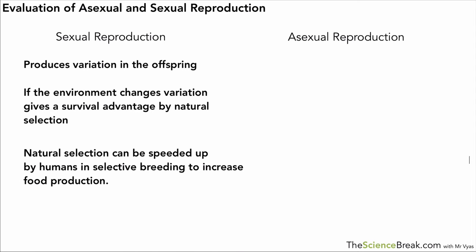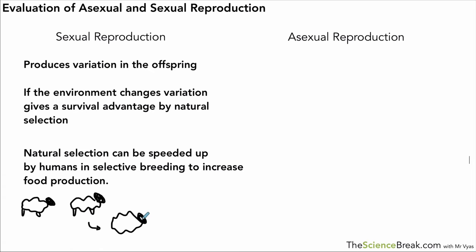People have managed to speed up natural selection by using something called selective breeding, and that's often used to increase food production. The example we're going to look at now is the idea of sheep producing wool. Imagine you've got two sheep — they could be crossed or mated and their offspring will show a variety of, for example, the amount of wool they have.